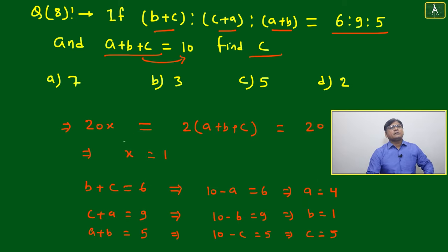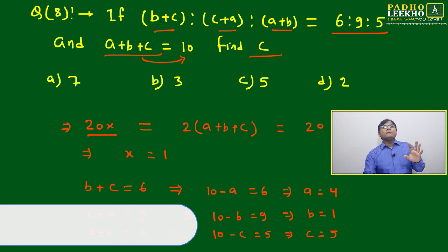What we'll do is just a simple thing. We'll take x as a common factor: 20x = 6+9+5. Nothing else, 20x will be equal to 2 times (a+b+c).